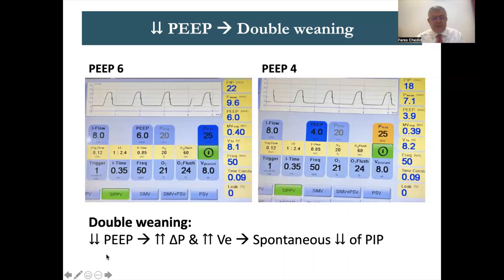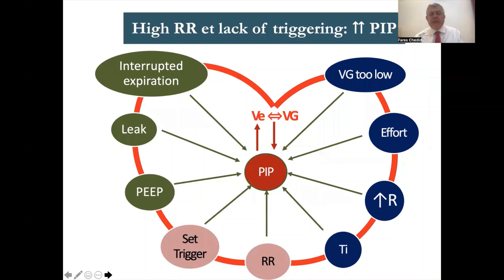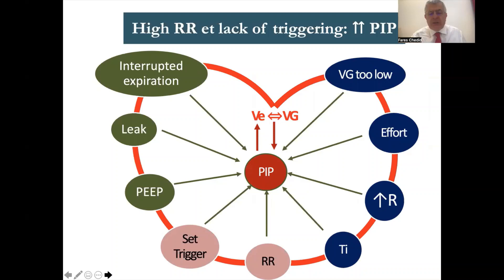To summarize dual weaning: decreasing PEEP increases the delta P, which increases expired volume, which causes the machine to spontaneously wean the PIP downward until VE returns equal to VG. Now I'll discuss set trigger and respiratory rate, because both work in the same way — if you don't allow the patient to trigger, or you set the rate too high, you will see a higher PIP.